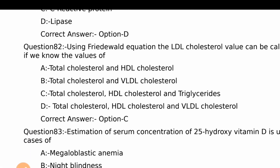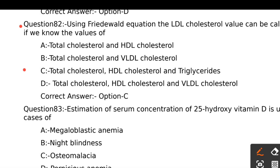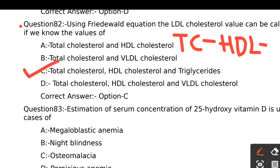Using the Friedwald equation, the LDL cholesterol value can be calculated if we know the values of: Option A - Total cholesterol and HDL, Option B - Total cholesterol and VLDL, Option C - Total cholesterol, HDL and TG, Option D - Total cholesterol, HDL and VLDL. The right answer is Option C. The Friedwald equation is: LDL = Total cholesterol minus HDL minus (Triglyceride divided by 5). So total cholesterol, HDL, and triglycerides are needed.